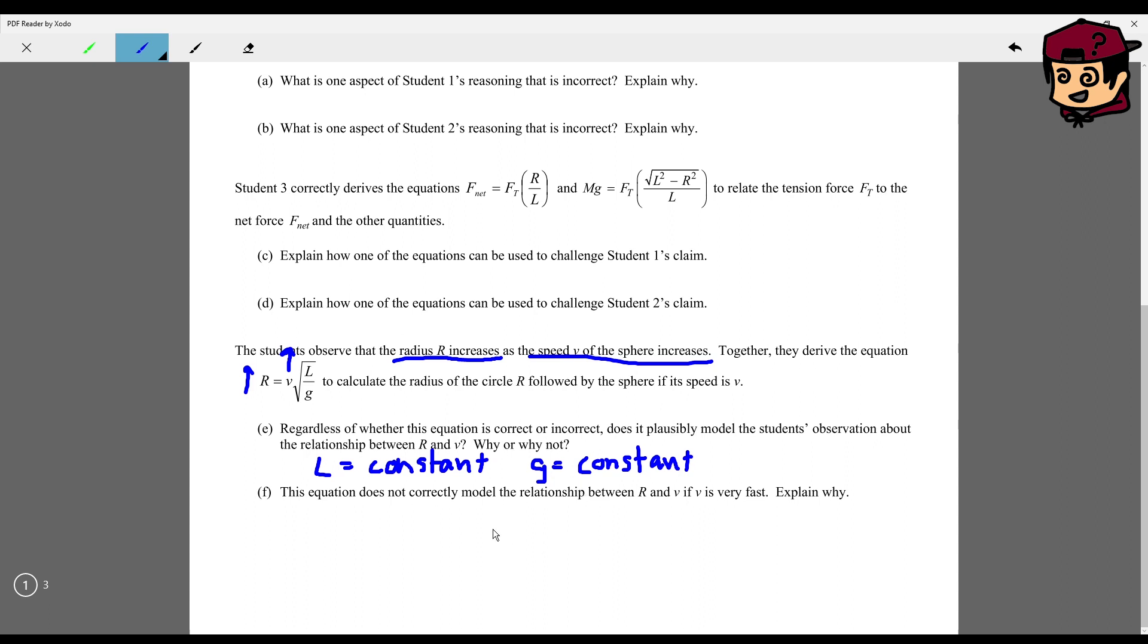This equation does not correctly model the relationship between r and v. If v is very fast, explain why. We have a sphere attached to the length l and it's being spun around. So first we have a radius r and then as the speed gets faster, it will change so that maybe the sphere is at this point now in a circle. Our r is increasing.